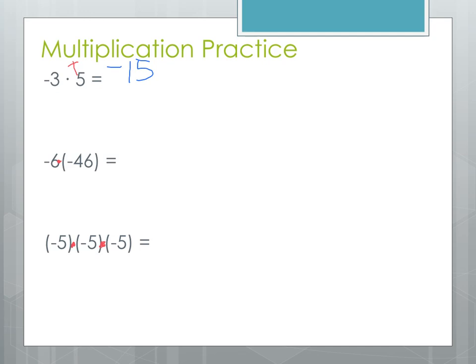Next we have negative 6 times negative 46. The signs are the same, so we're going to get a positive answer. Doing vertical multiplication with the longer number on top: 6 times 6 is 36, so that's 6 carry the 3. Then 6 times 4 is 24, plus the 3 carried, is 27. So the answer is positive 276.